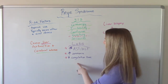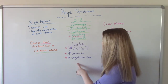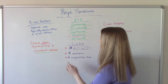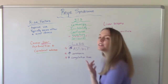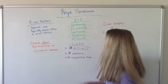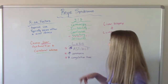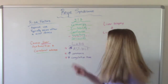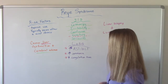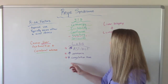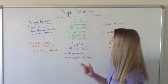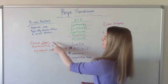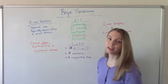When we do labs, I've put them all in red because these are liver labs. Your AST and your ALT are going to be elevated. Your ammonia is going to be elevated, and your coagulation times are going to be elevated — all because of the liver dysfunction that Reye Syndrome causes.